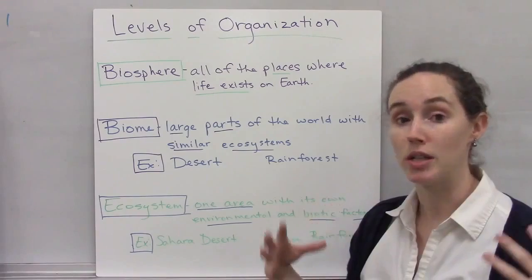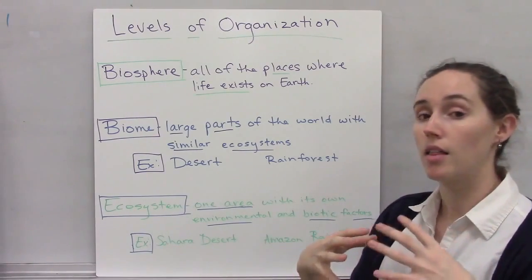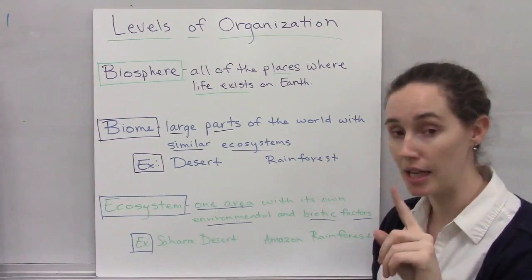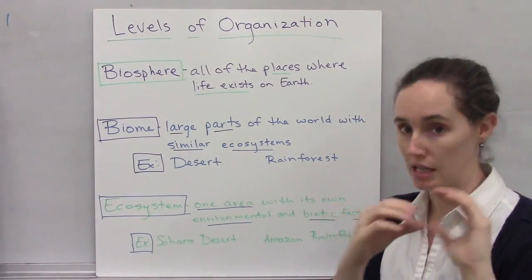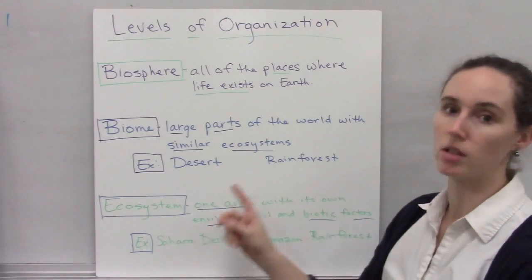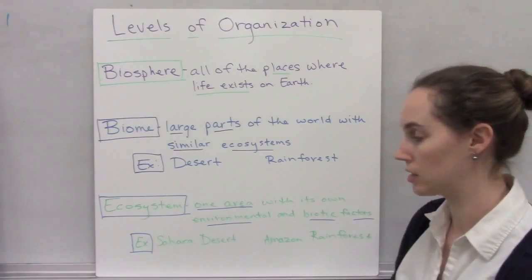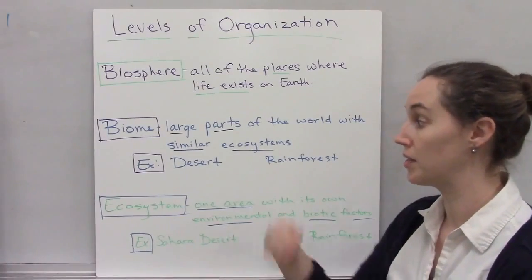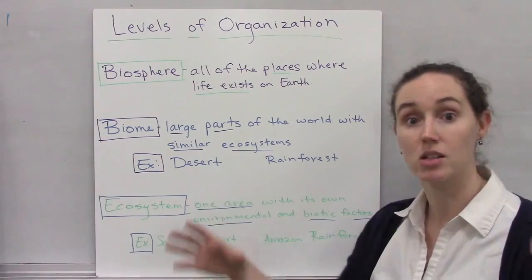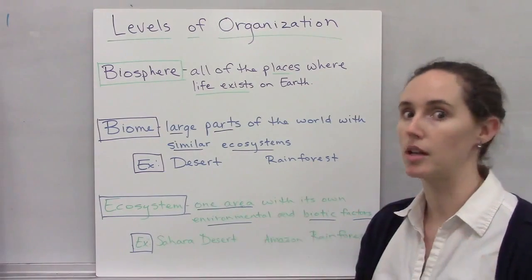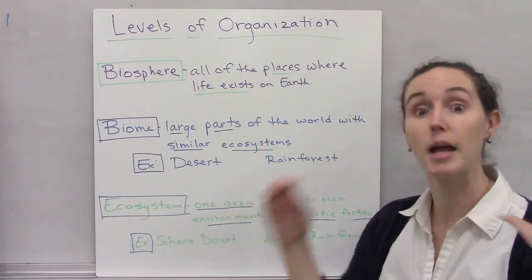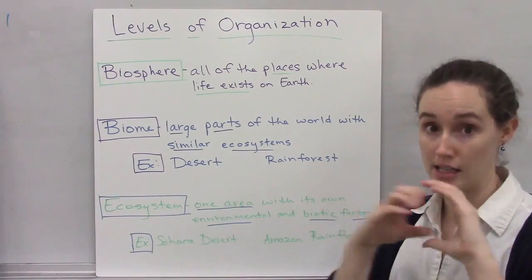When you get to an ecosystem, that's when you get a little more specific. It's one area with its own environmental and biotic factors — one part of that biome. So instead of the biome being desert, an ecosystem might be the Sahara Desert. Or instead of all rainforests being a biome, the Amazon Rainforest is an ecosystem.